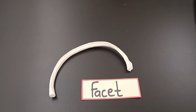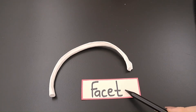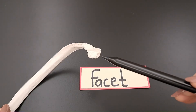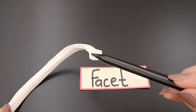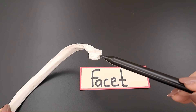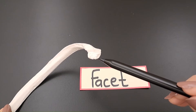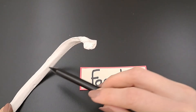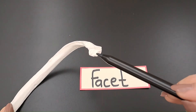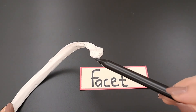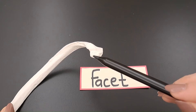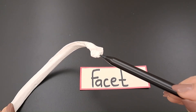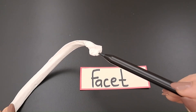Moving to the third projection, a facet, which is a smooth, flat articular surface. An example is the rib — on the head of the rib, we have the articular facet, which articulates with the vertebra.